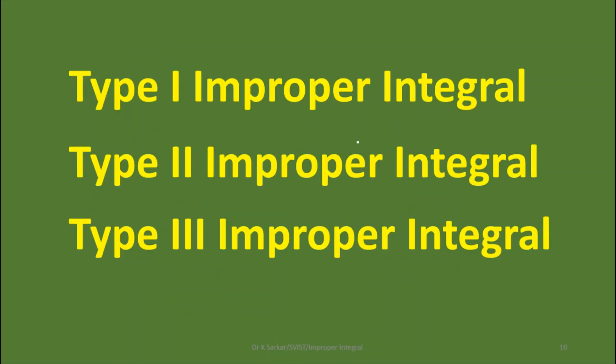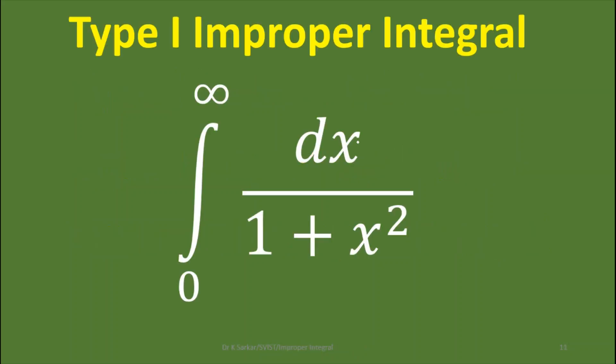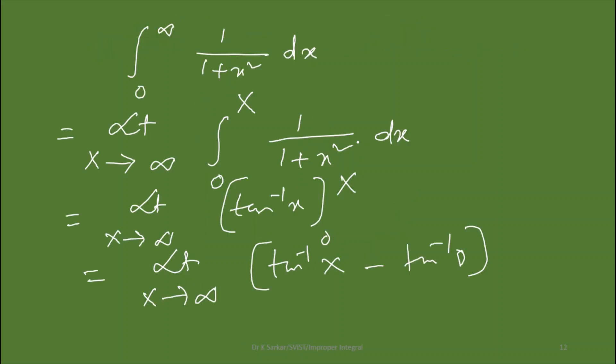For the first kind of improper integral, there are three types: Type 1, Type 2, and Type 3 improper integral. Type 1 improper integral is where the upper limit is infinity. Here is one example: integration from 0 to infinity of dx by (1 plus x squared). Since the upper limit is infinity, let us solve this integration.